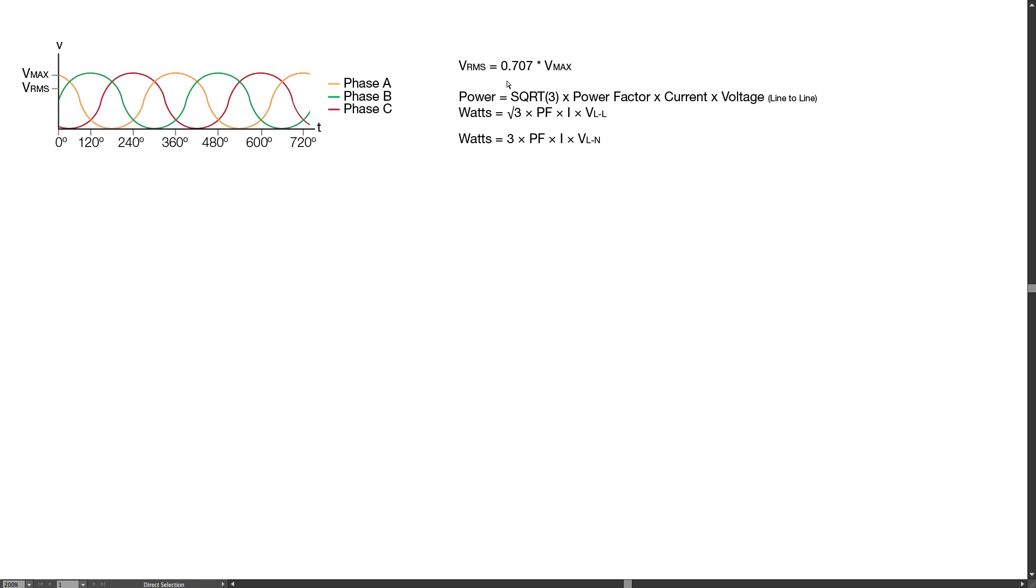If you're looking to calculate power, you take the square root of 3 times the power factor times the current times the voltage. In this case we're referring to line-to-line voltage. This formula simplified is watts equals the square root of 3 times the power factor times the current times the voltage line-to-line.